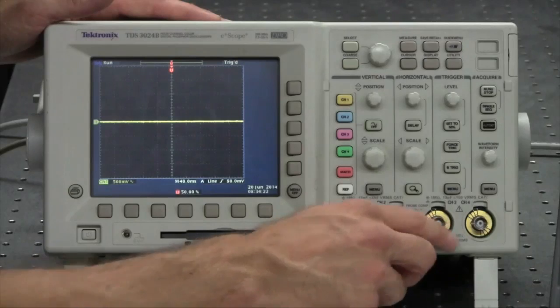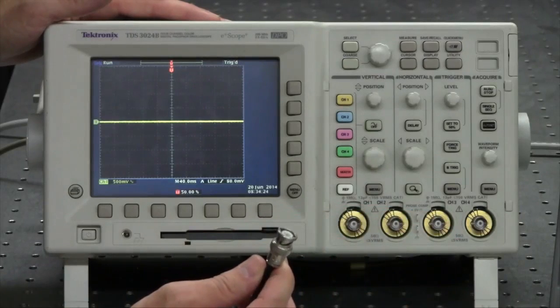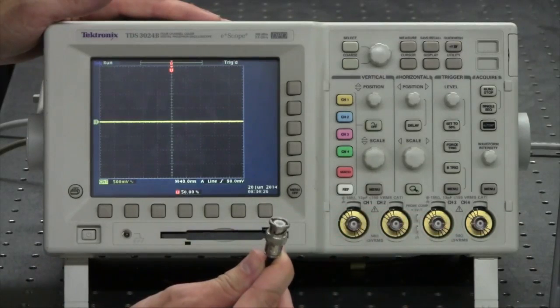Each channel has a BNC connector where I can attach a cable or a probe that contains a signal that I want to visualize.